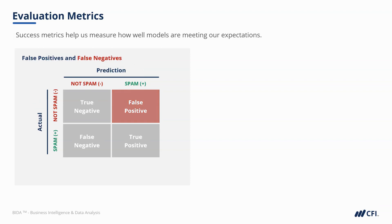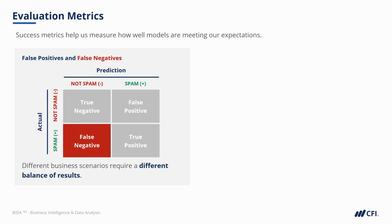To avoid this scenario, the spam detector may predict more negatives, but now the user often finds junk in their inbox. So what is the right balance? Only customer feedback can tell us. Each business scenario requires a unique balance of results. Spam detection and costly machining shutdowns both suffer when we identify too many false alarms. But disease detection generally tries to avoid false negatives — better be safe than sorry.